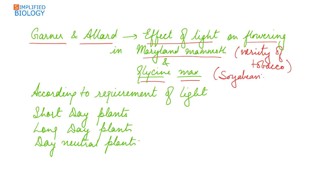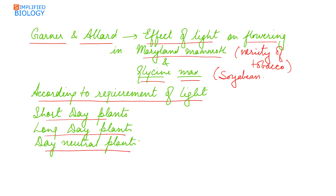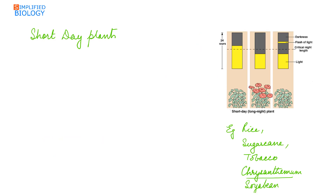According to their requirement of light for flowering, plants have been divided into three types: short day plants, long day plants, and day neutral plants. We'll start with short day plants, which can also be referred to as long night plants.